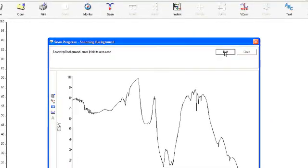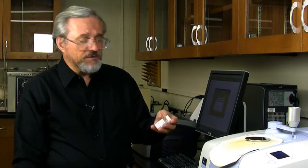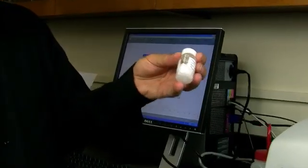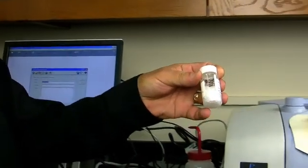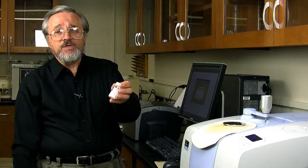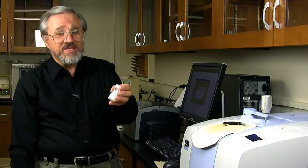Now, what we want to do is to take our sample. I've chosen a sample. It's a solid, a nice white solid, nice crystalline material, as you can see. This is 1,4-ditertiary butyl benzene.